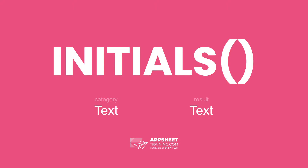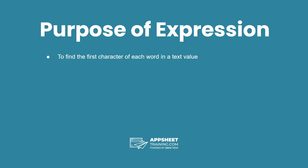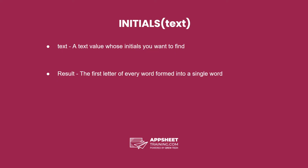The initials expression is in the category text and has a result of a text data type. The purpose of this expression is to find the first character of each word in a text value. The initials expression has one parameter: a text value whose initials you want to find. The result is the first letter of every word formed into a single word.